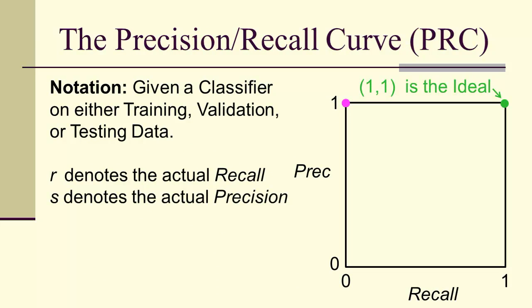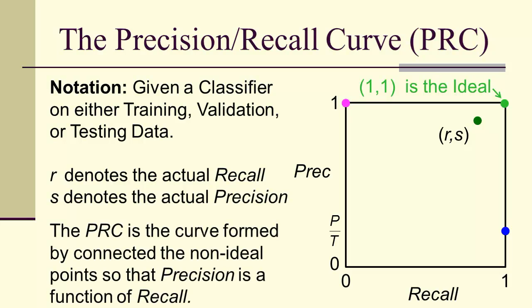So here's what we have. We start out at 1, and the actual recall and precision we measure for our test set is going to be R,S, some point out in the middle of space. We're also going to have this other extreme corresponding to the blue, where you have P over T. Then we construct the precision-recall curve by connecting the points so that precision is a function of recall.